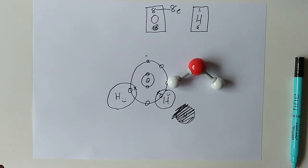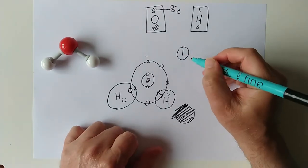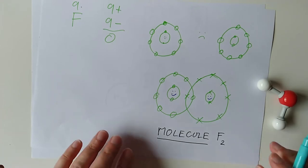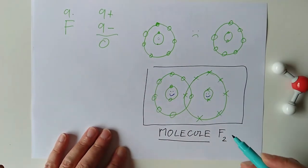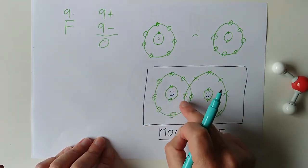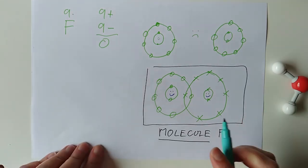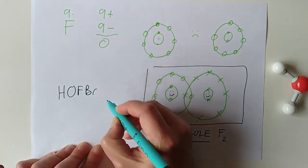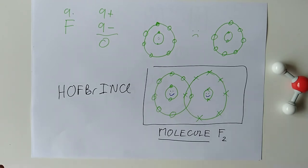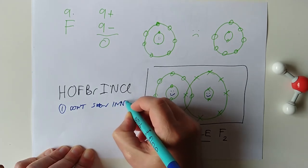Two tasks then — actually I'm going to pose you three tasks. Task number one: I would like you to see how I showed you the structure of the fluorine molecule with the pair of electrons overlapping. I would like you to do a drawing like this for all of the Hoffbrinkels — seven versions, one for each. Show their outer electrons and how they overlap. You can use circles from one atom and crosses from another — or all dots, it's your call. One helpful hint: don't show inner electrons.